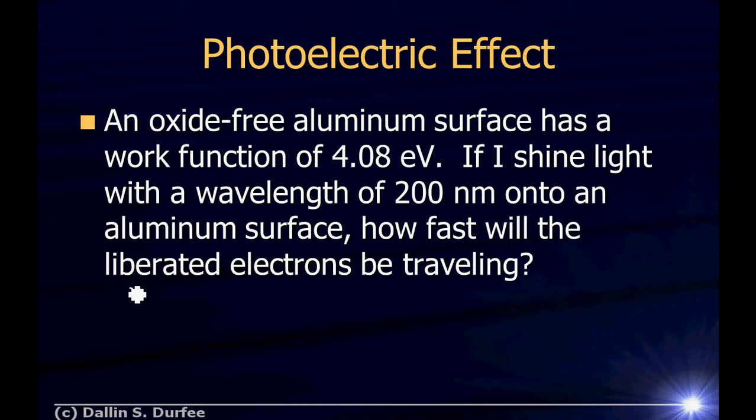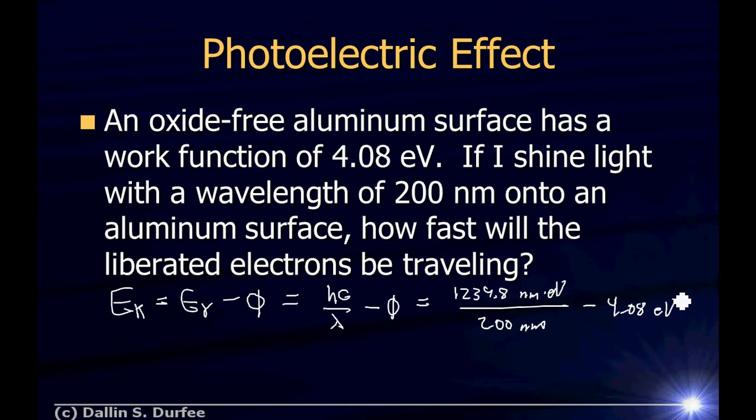So here we are. The kinetic energy is just the energy of my photon minus the work function, right? And the energy of my photon is hc over lambda, right? hf, which is hc over lambda, and then I've got my work function. And remember, hc is 1,239.8 nanometer electron volts, divided by my wavelength is 200 nanometers minus my work function, which is 4.08 electron volts.